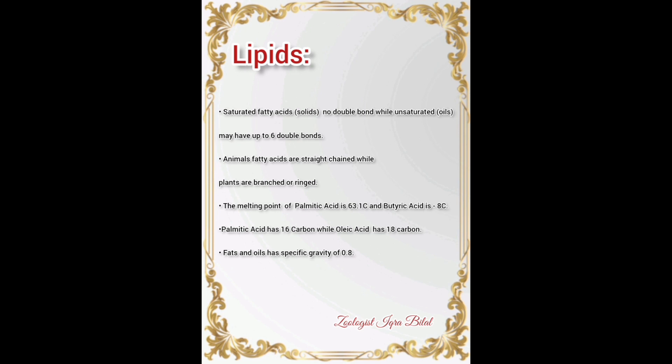The melting point of palmitic acid is 63.1 degrees centigrade and butyric acid is minus 8 degrees centigrade — important MCQ facts. Palmitic acid has 16 carbons while oleic acid has 18 carbons. Fats and oils have a specific gravity of 0.8.